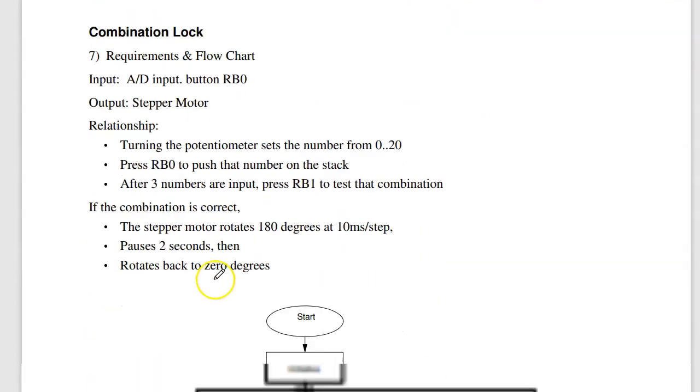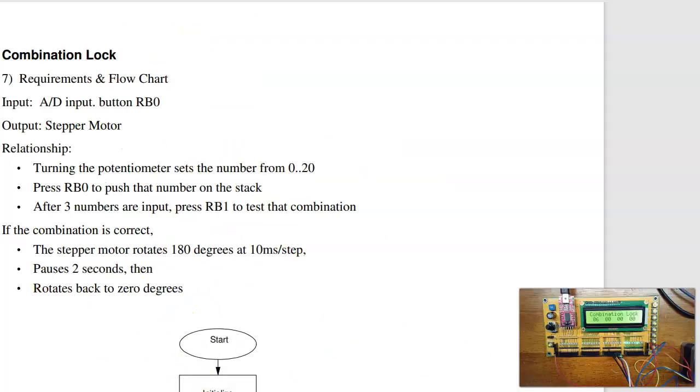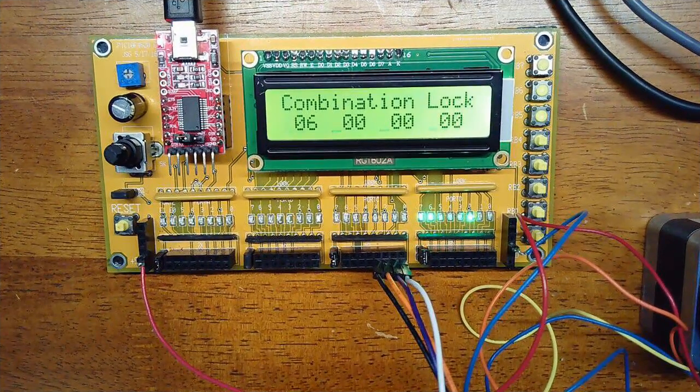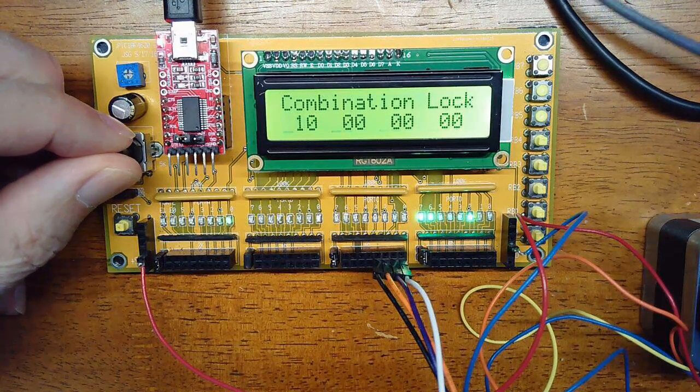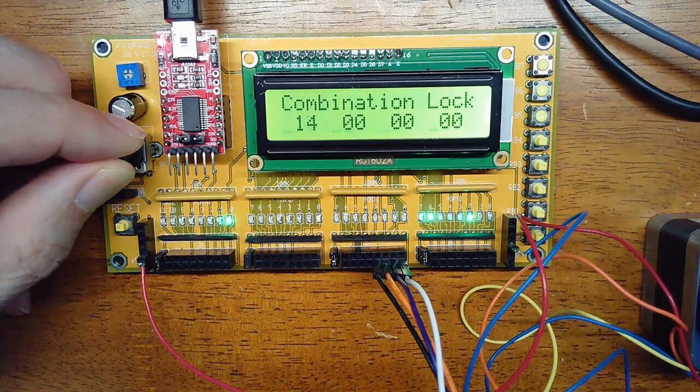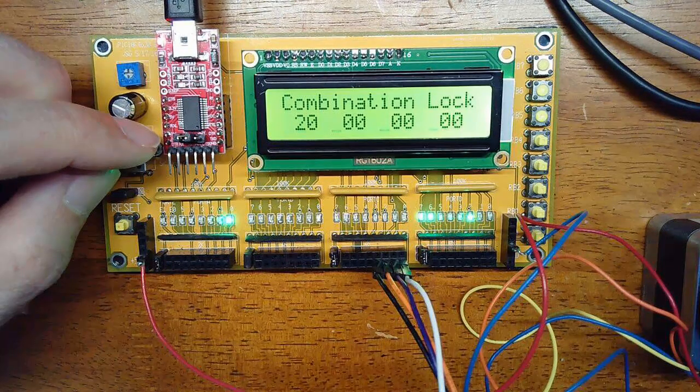Now, the last problem is a combination lock. So here's the idea. What I want to do is have a combination lock. As I turn the potentiometer, the analog input, the number that I'm inputting changes. So I input the numbers 0 through 20.